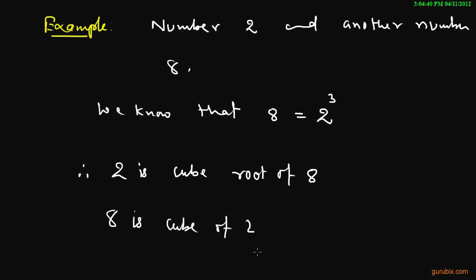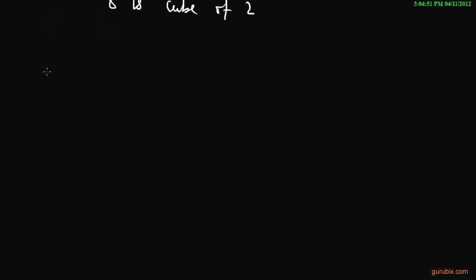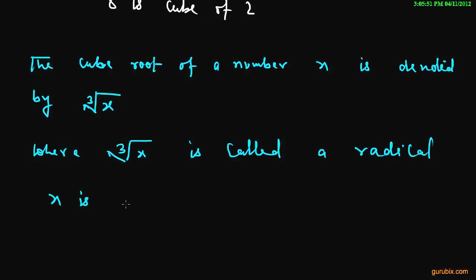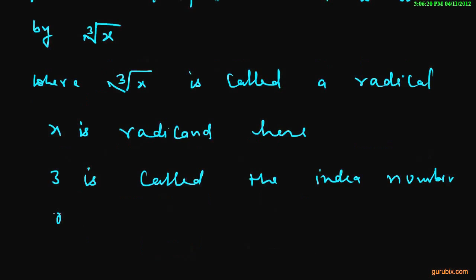This is the meaning of cube root of a number and the cube root of a number x is denoted by like this where cube root of x is called a radical. x is the radicand here and 3 is called the index number of the radical.